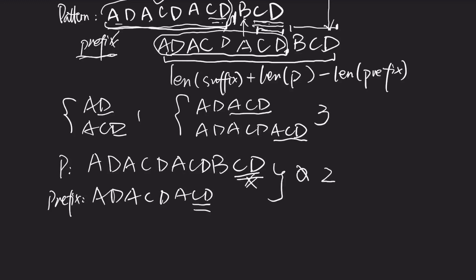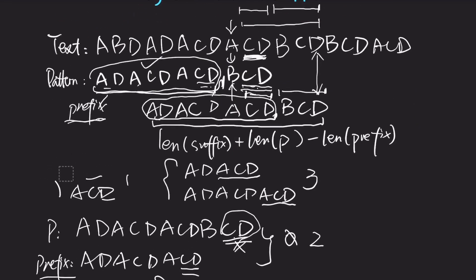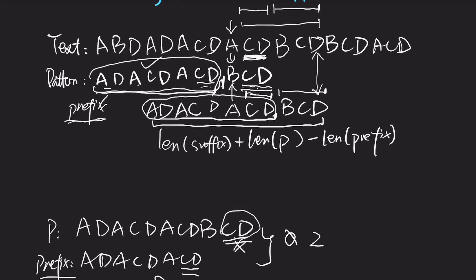Now we have CD matching with this CD. The longest common surface is 2. So we found the prefix length here is 8, and the suffix length is equal to the common suffix length, which is 2. The skip value equals surface length plus pattern length minus prefix length: 2 + 11 - 8 = 5. Let's check — 1, 2, 3, 4, 5. Correct.